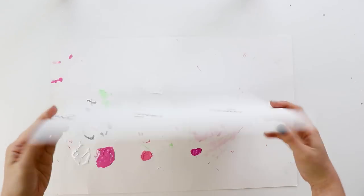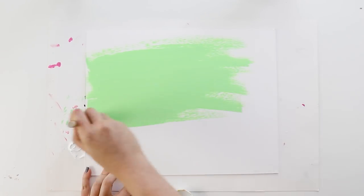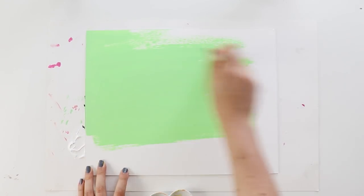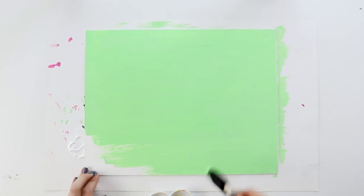Now for the bottom of our foosball game, I cut a piece of museum board to be the size of my box and I painted it green. If you don't have museum board, you can use cardboard or any sturdy flat material that you have on hand.